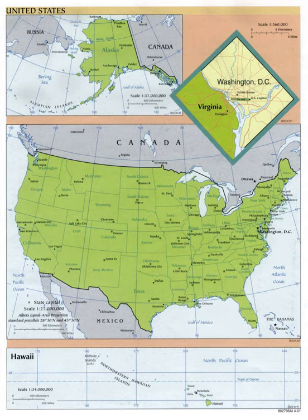Political divisions, also referred to as administrative divisions of the United States, are the various recognized governing entities that together form the United States: states, territories, the District of Columbia, and Indian reservations.